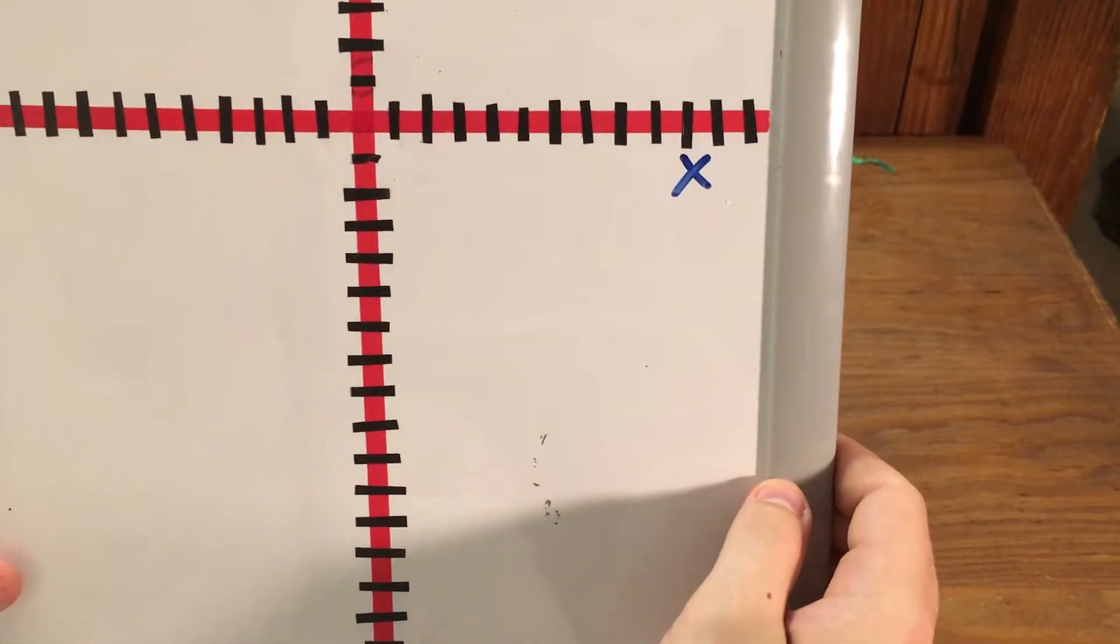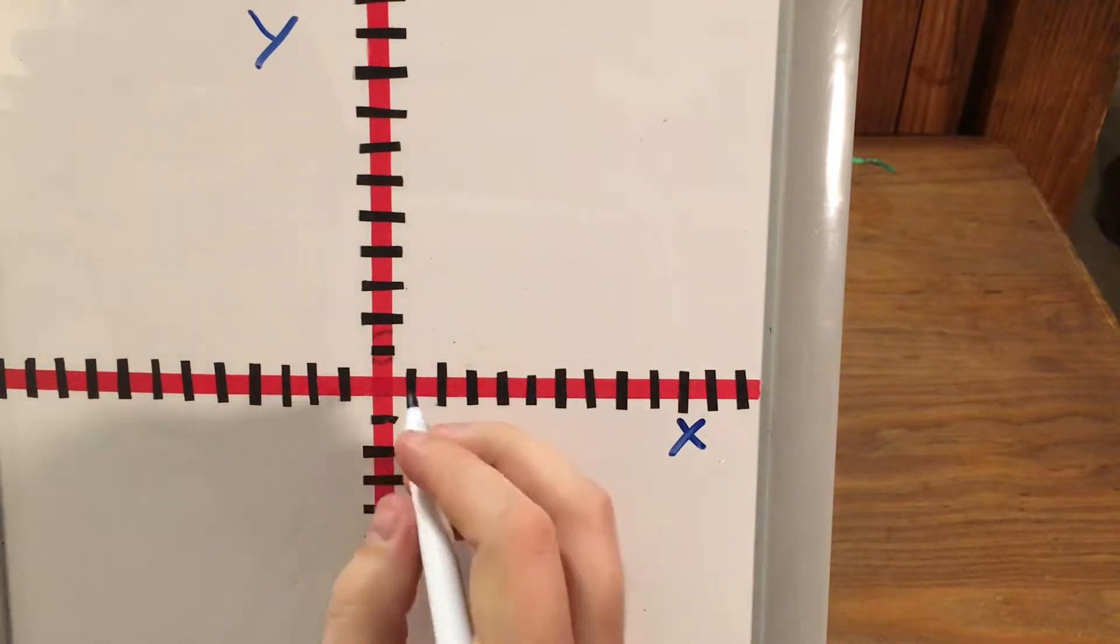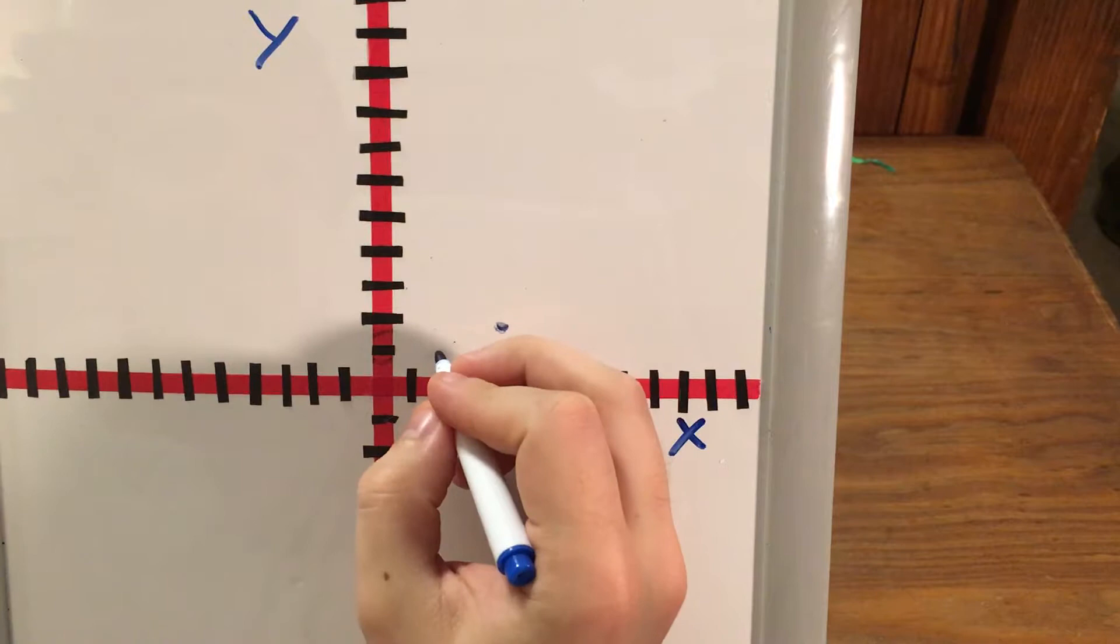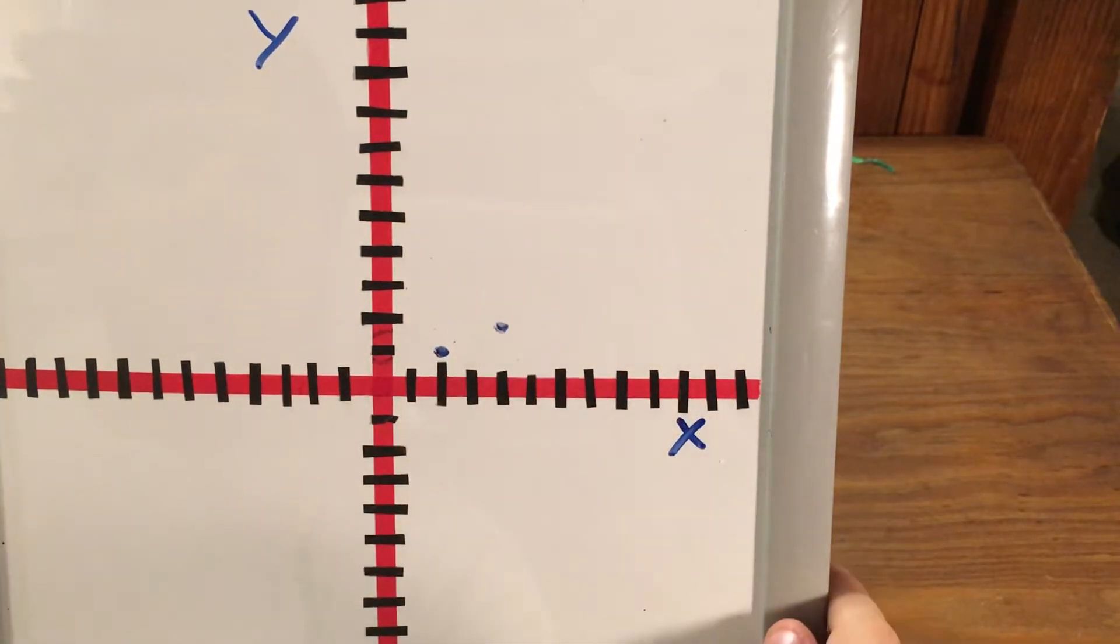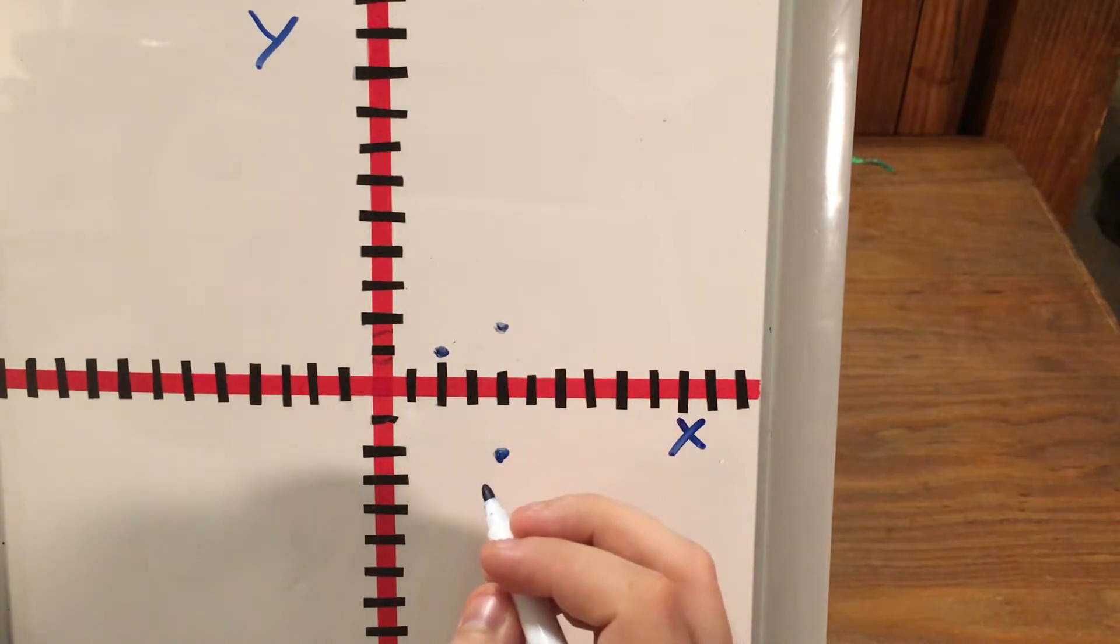My 3 points are (4, 2), (2, 1), and (4, -2). So I'll start by graphing (4, 2), which puts me here. (2, 1) puts me there. And now (4, -2) actually puts me here. I run into the same problem. My 3 points are not on the same straight line, so I know that choice B can't be it.